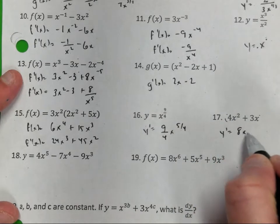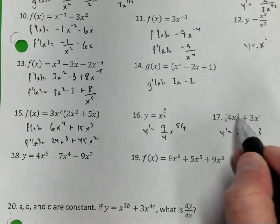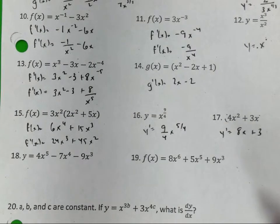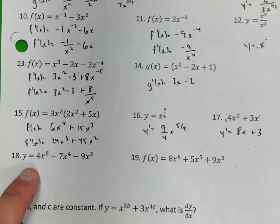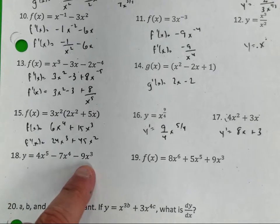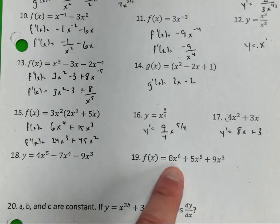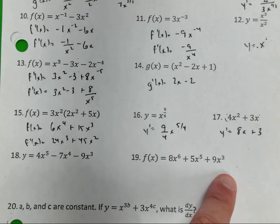So y prime equals 8x plus 3. 2 times 4 is 8, take 1 off that. 1 times 3 is 3. 1 minus 1 is 0, so you don't have to worry about the x. Number 18, y prime equals 20x to the 4th minus 28x to the 3rd minus x squared. Number 19, f prime equals 48x to the 5th plus 25x to the 4th plus 27x squared.